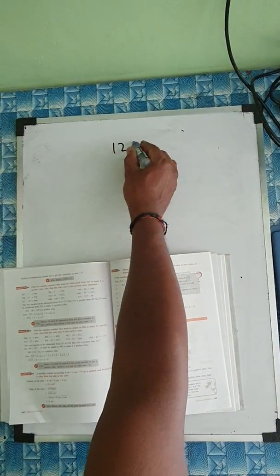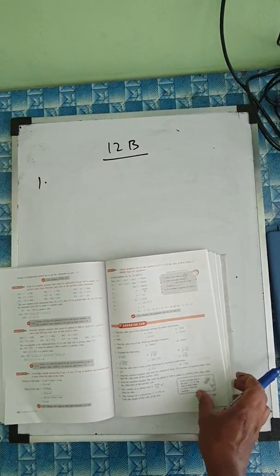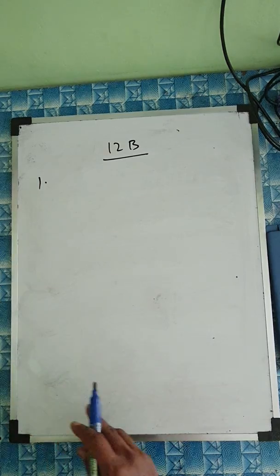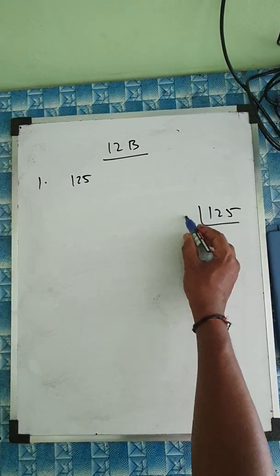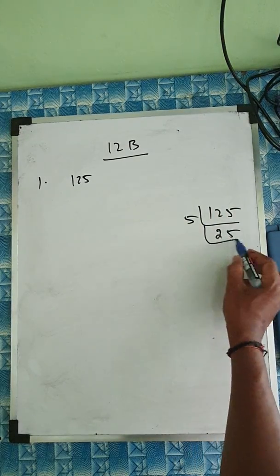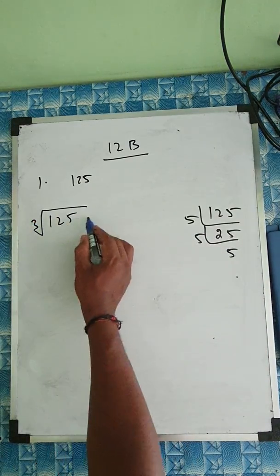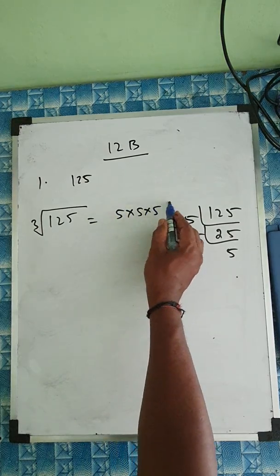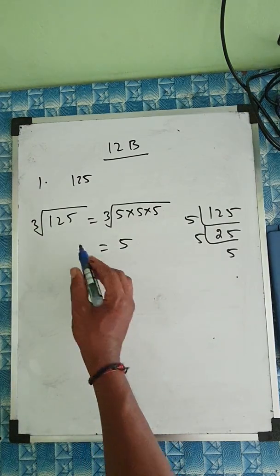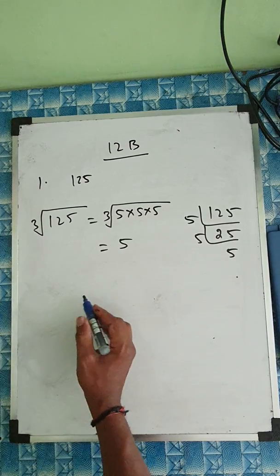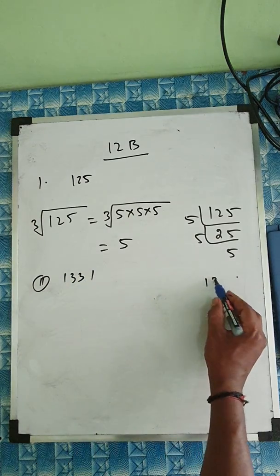Exercise 12 part P: find the cube root of the following numbers by prime factorization. First, 125. We have 5 × 5 × 5, so we take one number from each group of three. The cube root of 125 is 5.